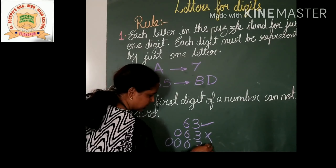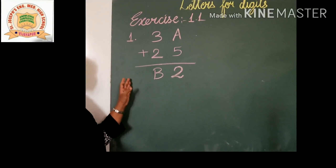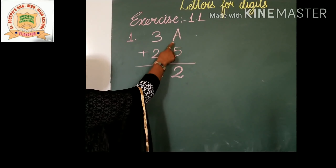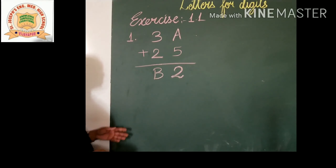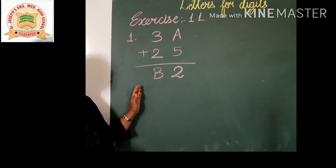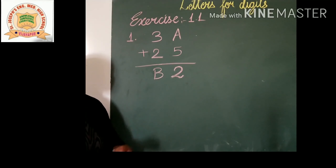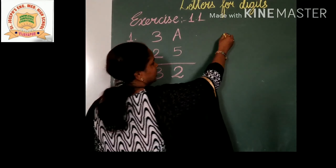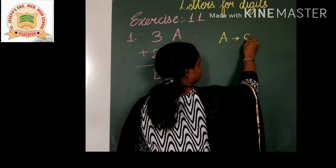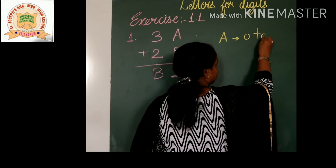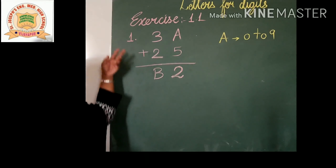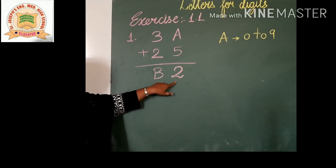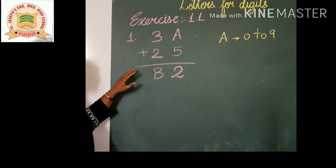This is the first exercise of the lesson Playing with Numbers. Here we have to find out the value of letters A and B. For simplification of such problems, we have to use the rule: one letter stands for one digit. It means the value of A must be from 0 to 9. Here A plus 5 gives a number with 2 in the unit place.